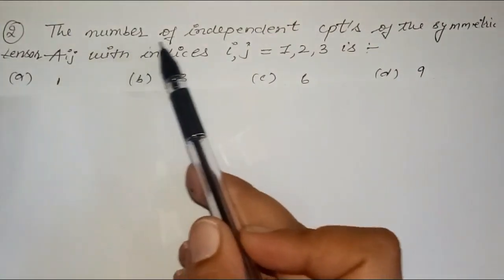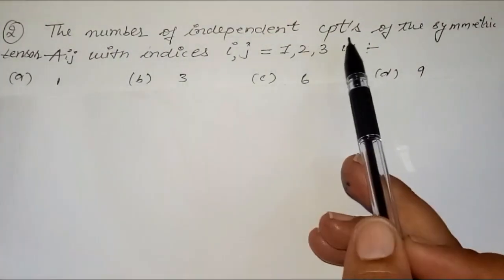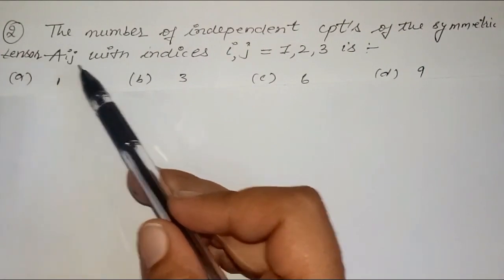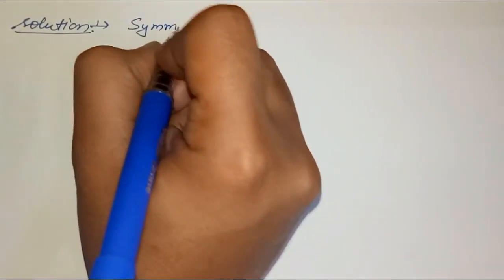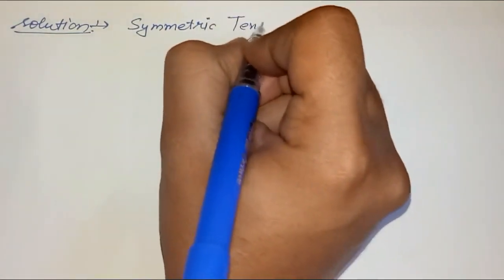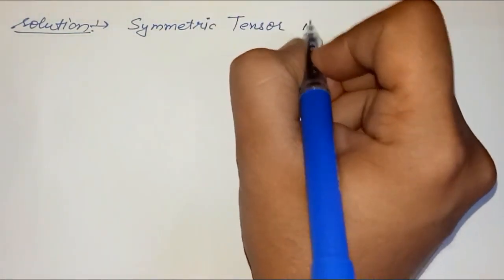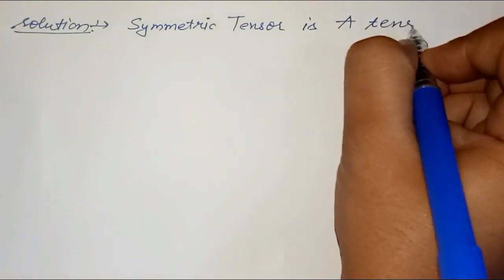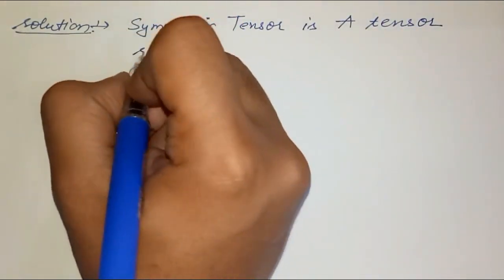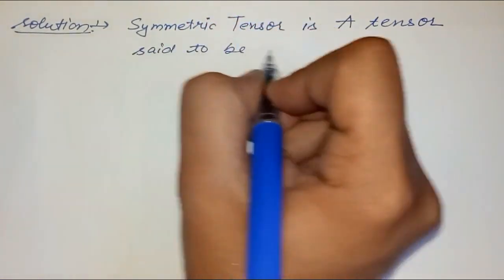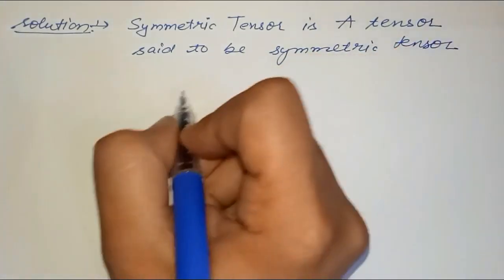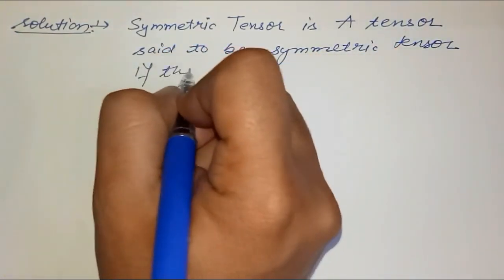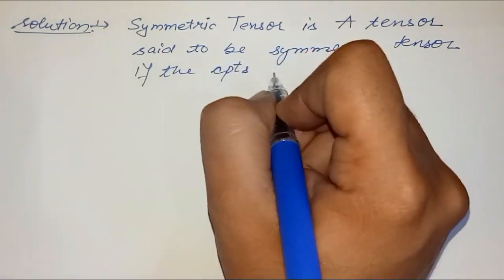The second question is: the number of independent components of symmetric tensor a_ij with indices i, j equal to 1, 2, 3. A metric tensor is said to be a symmetric tensor if the components satisfy the relation a_mn equals a_nm.